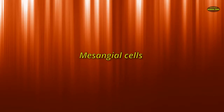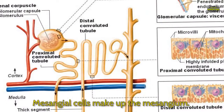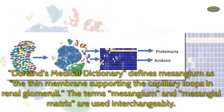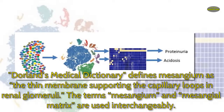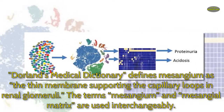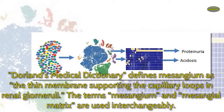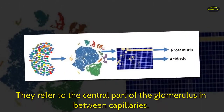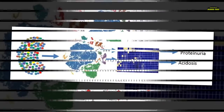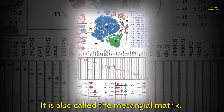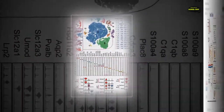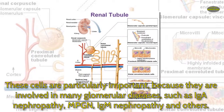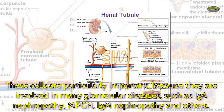Mesangial cells make up the mesangium. Dorland's medical dictionary defines mesangium as the thin membrane supporting the capillary loops in renal glomeruli. The terms mesangium and mesangial matrix are used interchangeably; they refer to the central part of the glomerulus in between capillaries. These cells are particularly important because they are involved in many glomerular diseases, such as IgA nephropathy, MPGN, membranous nephropathy, and others.